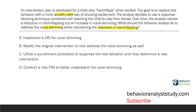The analyst wanted to address the hand flapping and wanted a more socially valid way of showing excitement. They developed an intervention and it was successful — there was a reduction in hand flapping. However, a new behavior has occurred: an increase in vocal stimming. Just because we've introduced a new intervention does not mean the vocal stimming was a result of the intervention. When a new behavior occurs and we observe it, what should be your first instinct? Your first instinct should always be assessment.